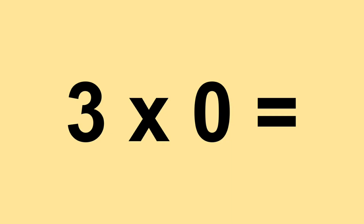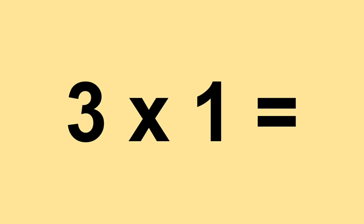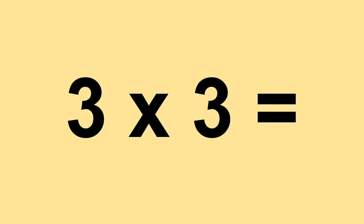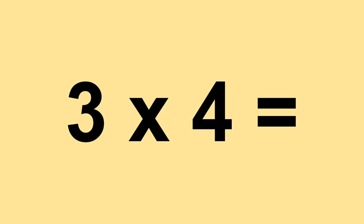Three times zero equals zero. Three times one equals three. Three times two equals six. Three times three equals nine. Three times four equals twelve.